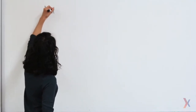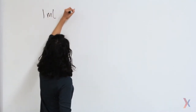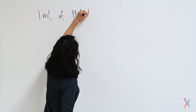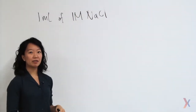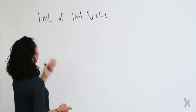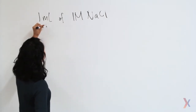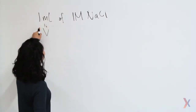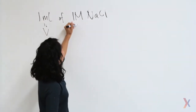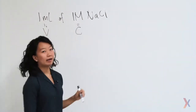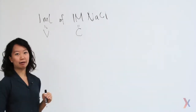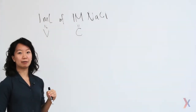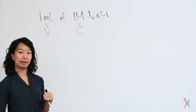Now suppose I'm trying to make a 1 mL solution of 1 molar sodium chloride. How do I go about doing this? There are a few key bits of information here. This tells me the volume of the solution that I want, and this tells me the concentration that I'm looking for. I can use this information to calculate how many grams of sodium chloride I need to measure out in order to make my solution.